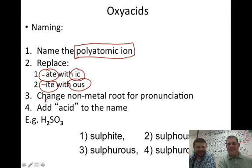So -ate's go to -ic and -ite's go to -ous. Okay. Sounds like a Dr. Seuss book. It does sound like a Dr. Seuss book. Change the nonmetal root for pronunciation-wise and add acid to the name. Okay. So H2SO3. SO3, if I look up what that is. It's sulfate. Is it sulfite? Maybe it's sulfite. Right. It is sulfite.